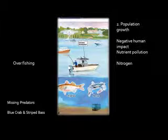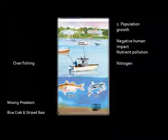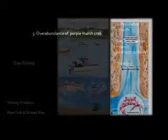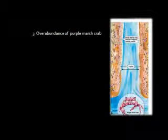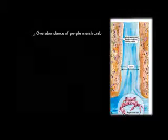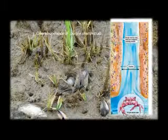Over-fertilization in ponds and marshes has killed eel grass, which provides habitat for shellfish, and many bays are clogged with algae in the summer. Now that the purple marsh crab has few predators, they are eating the cord grass that lines the edges of the ditches, ruining the banks and increasing erosion — widening the ditches and killing off the salt marsh.